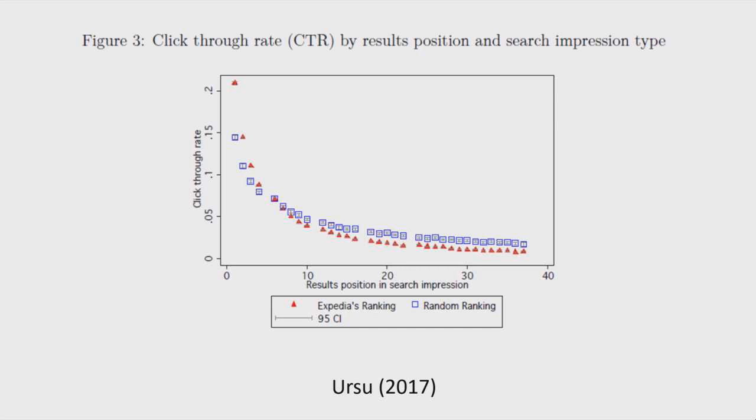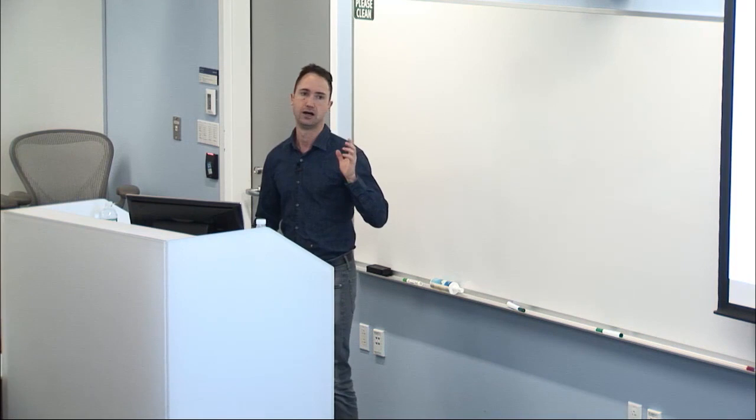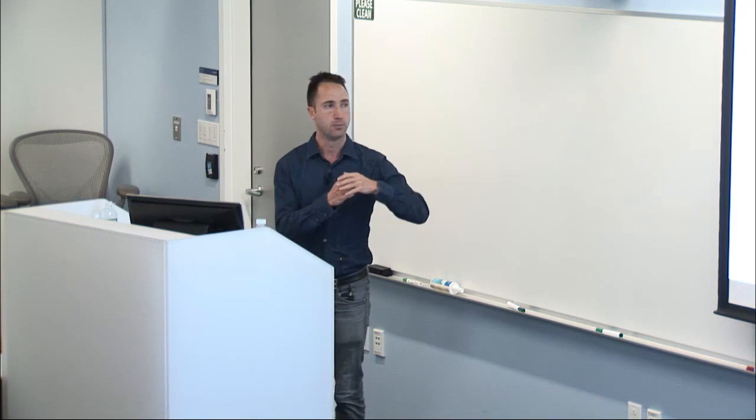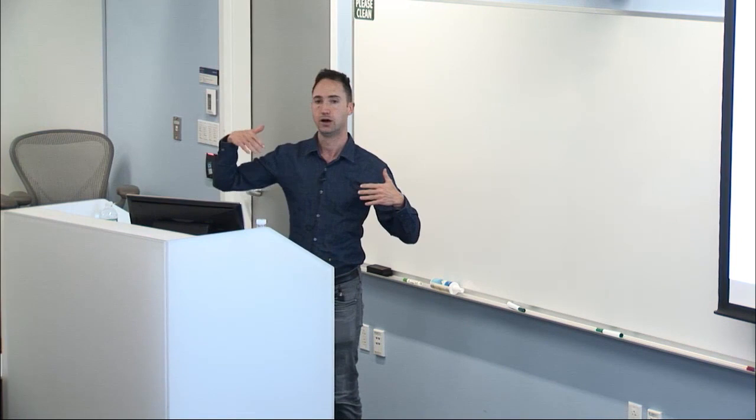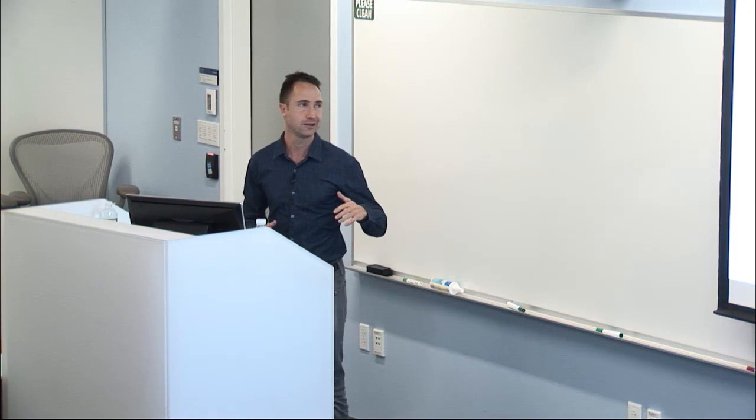This is from a paper by Riluko Ersu, an economist in the marketing department at NYU, studying a dataset from Expedia posted on Kaggle. In that dataset, they randomized the rankings of hotels displayed on the page and also had a holdout with Expedia's original ranking. She shows the click-through rate declines monotonically as a function of position—which we also see in ads on Bing and which many papers document.